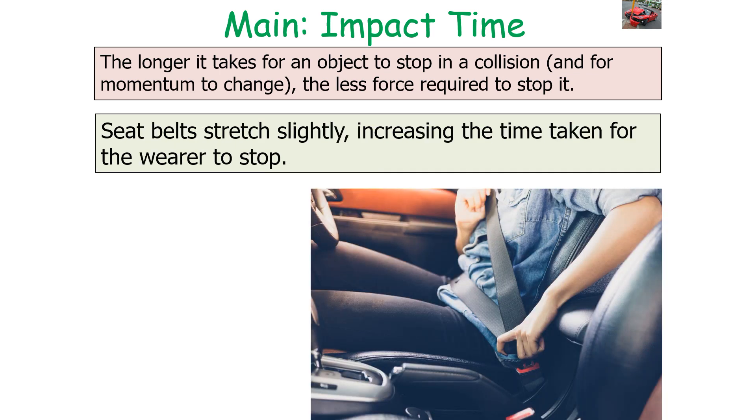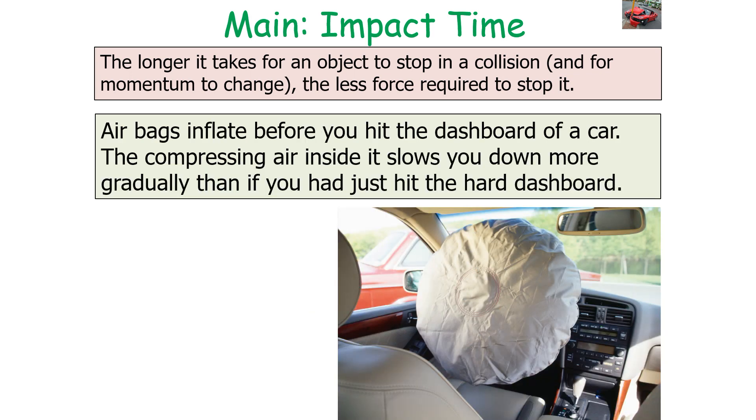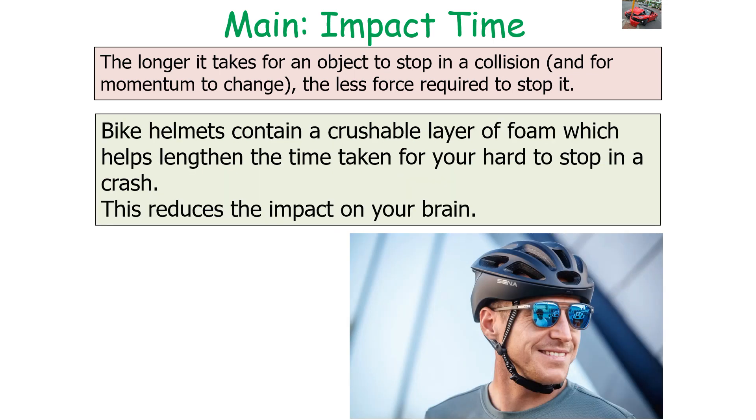In addition, seatbelts actually stretch slightly, increasing the time taken for the wearer to stop. Airbags inflate before you hit the dashboard of the car, the compressing air inside slows you down more gradually than if you just hit the hard dashboard. In addition, bike helmets contain a cushionable layer of foam, which helps lengthen the time taken for your head to stop in a crash, which reduces the impact on your brain.